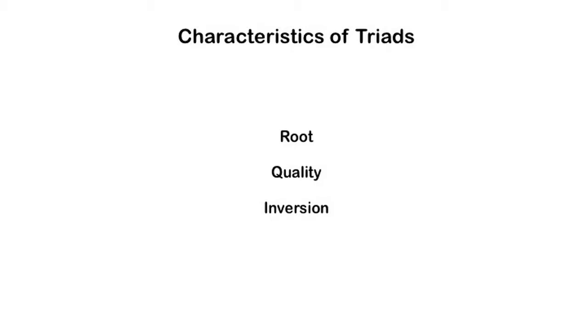Let's start by talking about triad quality first. There are four triadic qualities: major, minor, diminished, and augmented.